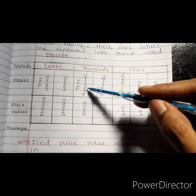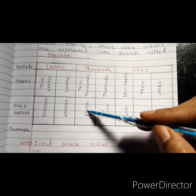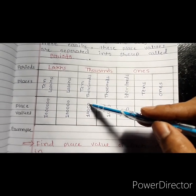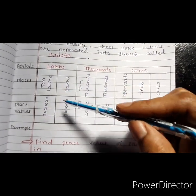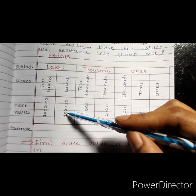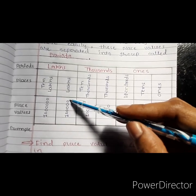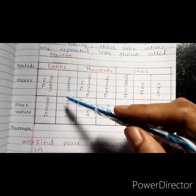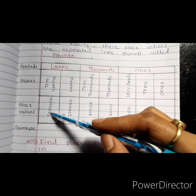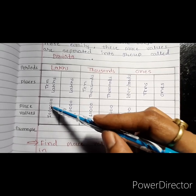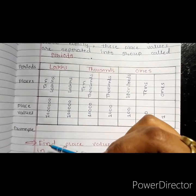Ten-Thousands has a place value of 10,000. Lakhs has a place value of 1,00,000. And Ten-Lakhs has a place value of 10,00,000.